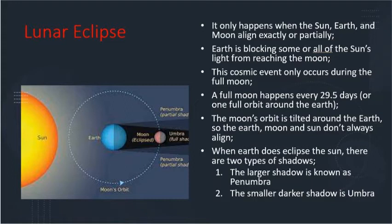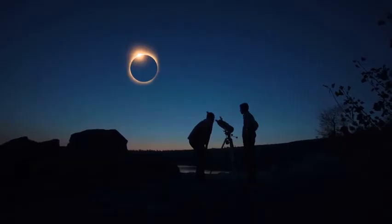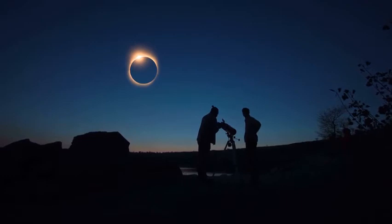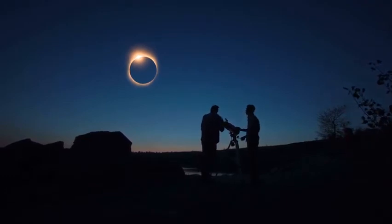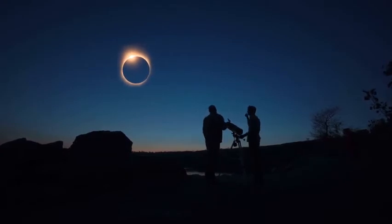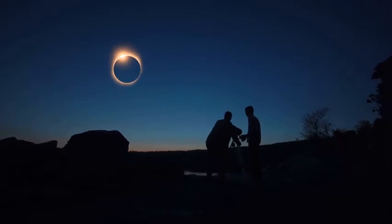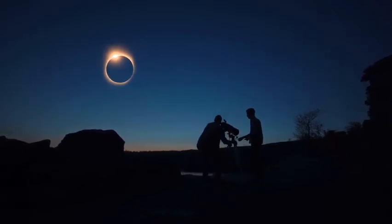Because they don't happen every month, lunar eclipses are special events. Unlike solar eclipses, a lot of people get to see each lunar eclipse — if you live on the nighttime half of the earth when the eclipse happens, you will be able to see it. Lunar eclipses are also completely safe to watch; you don't need any kind of protective filters, and it's not even necessary to use a telescope. You can watch a lunar eclipse with nothing more than your own eyes.